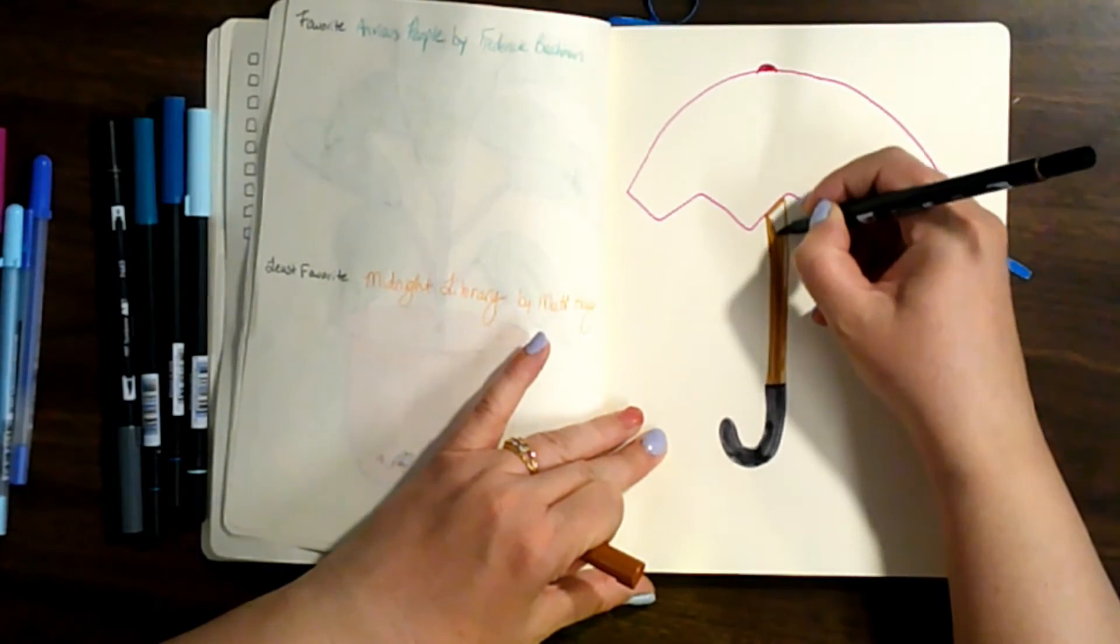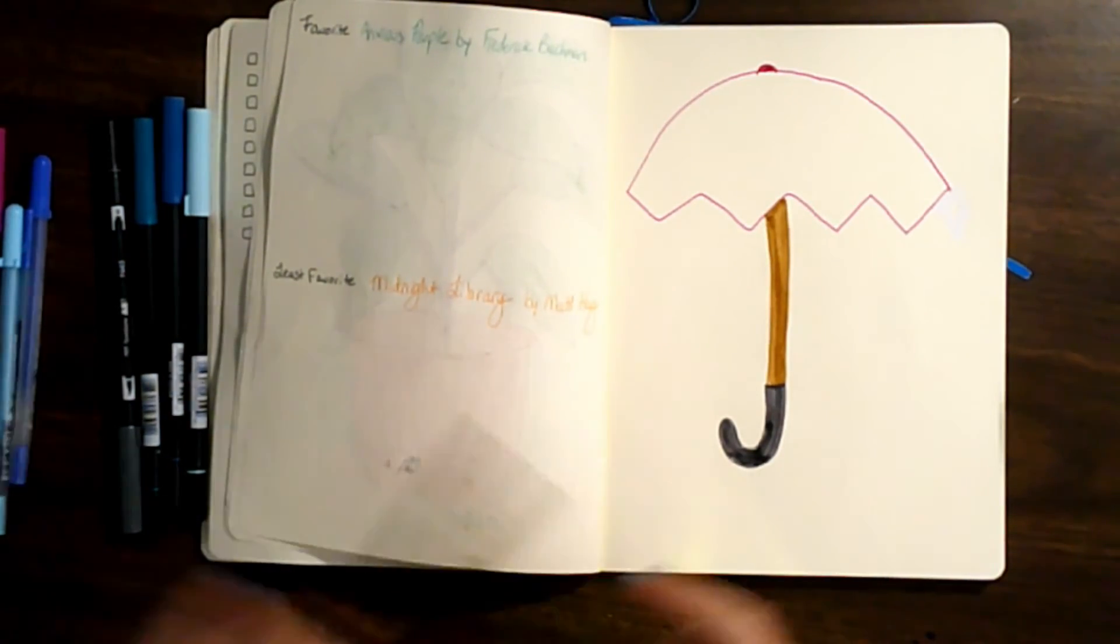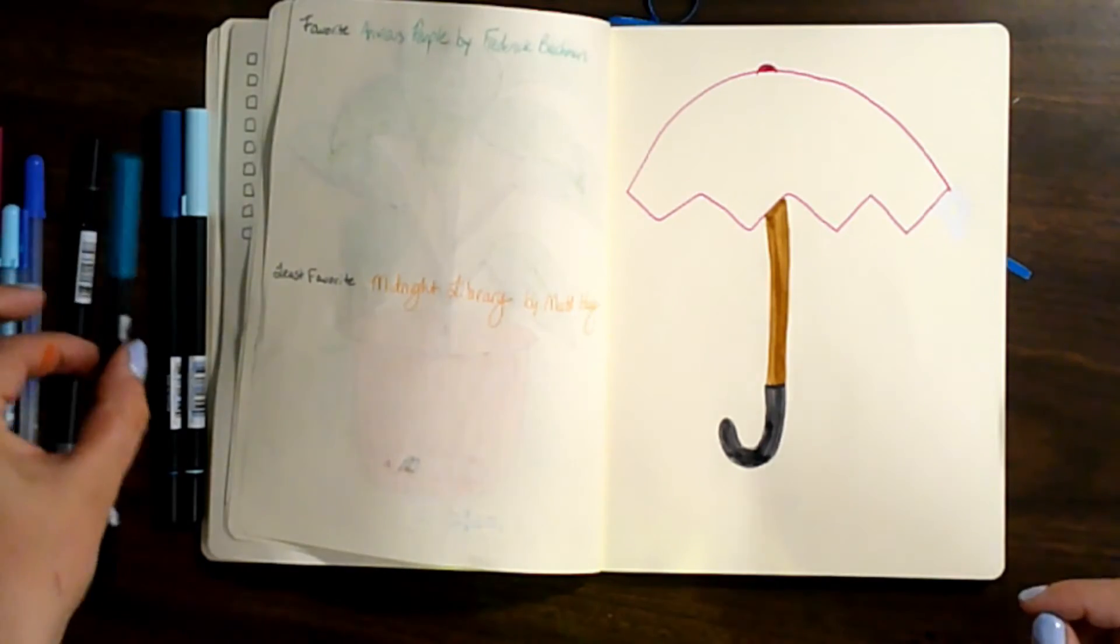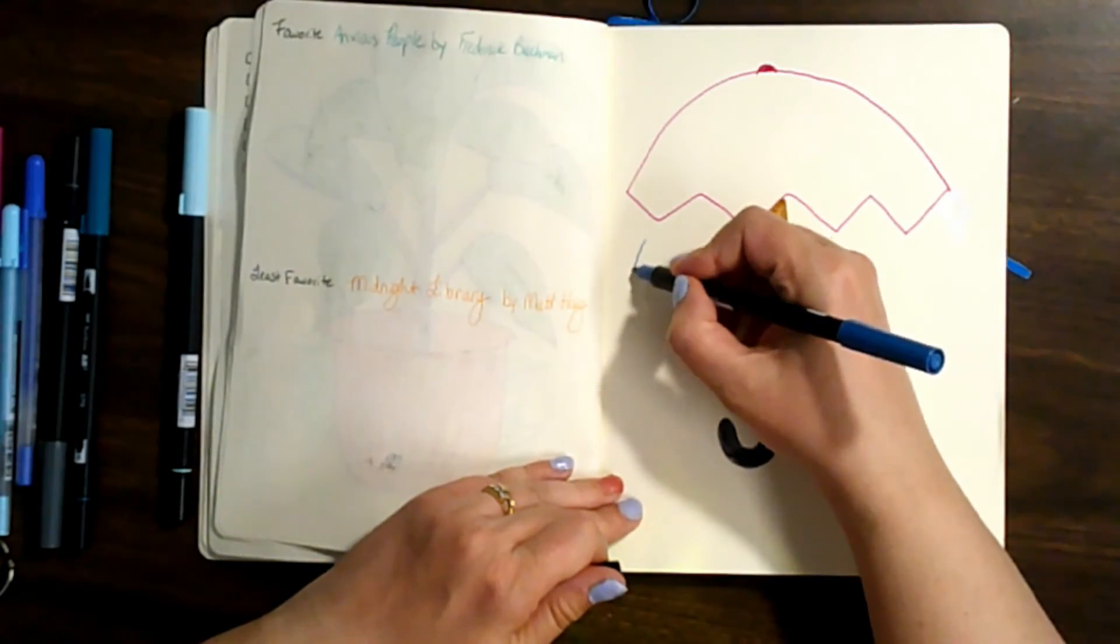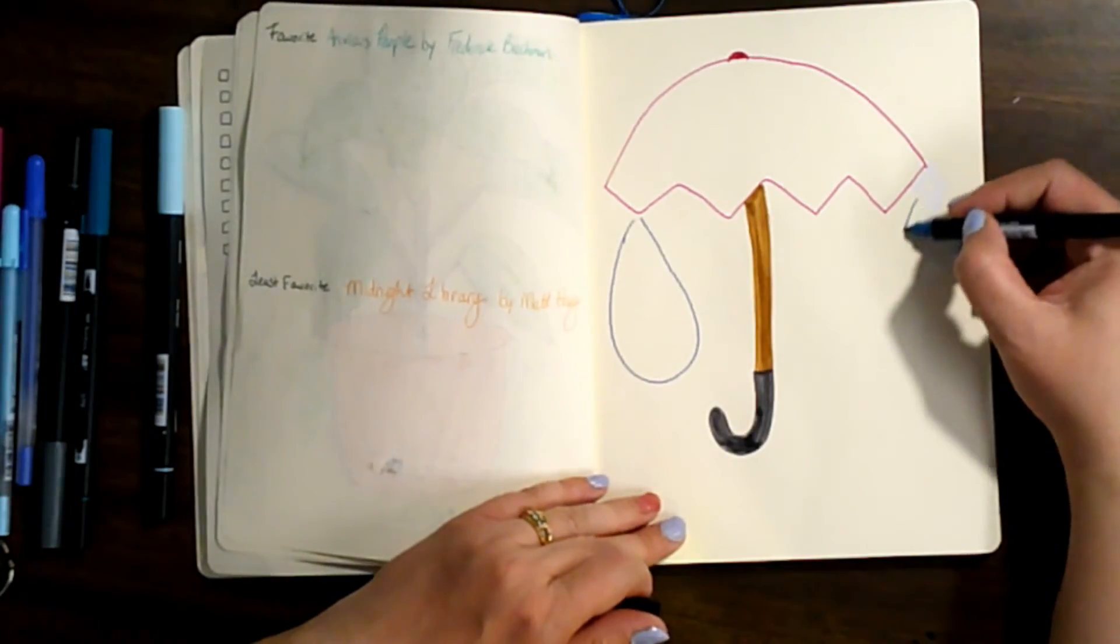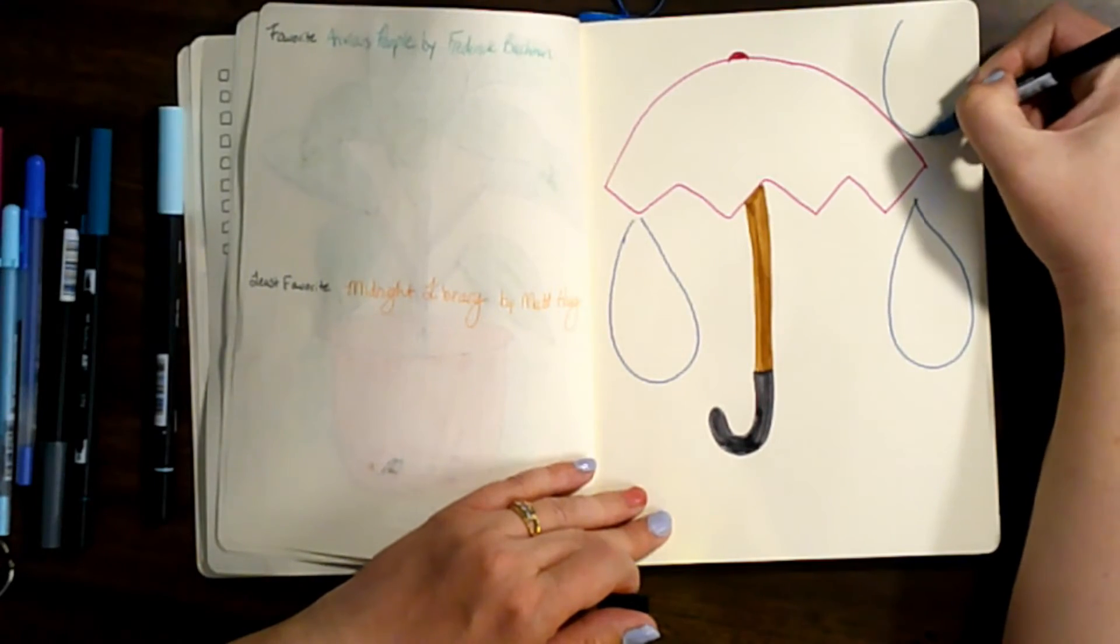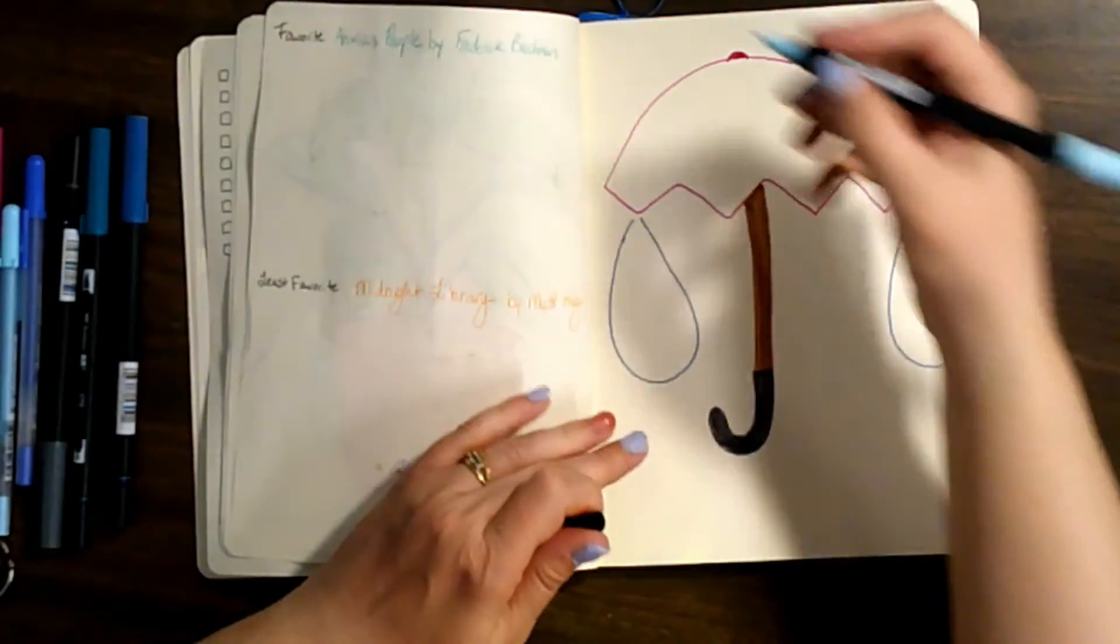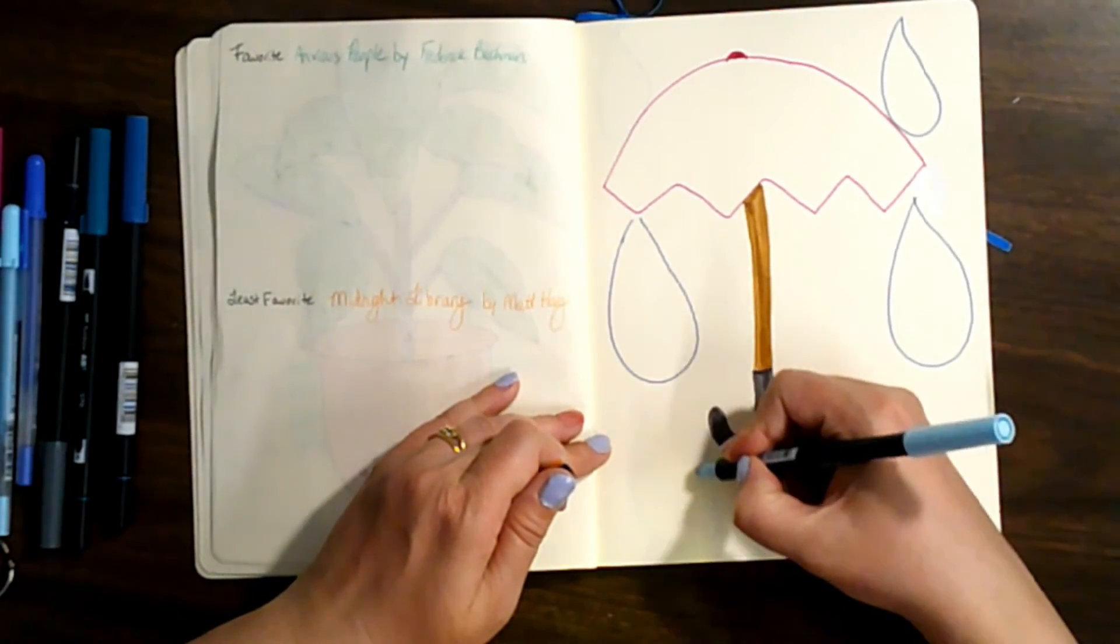And then I'm going to do some raindrops around, and they're going to be disproportionately big to the size of the umbrella, just because I need to make sure that I have enough space in there to write. Because this is where I'm going to write the book titles as I finish them. So I know it's going to look a little strange, but I'm not sure how to get around that. Artistic representations, I guess, don't always have to be perfect.